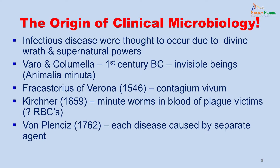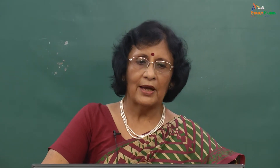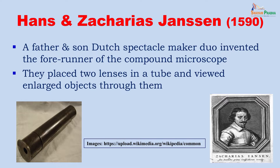In 1762 it was again postulated that each disease was caused by a separate agent. We had to wait for the development of the microscope before any progress could be made in microbiology. A father-and-son Dutch spectacle maker duo, Hans and Zacharias Janssen, were the first to work with the microscope. They created a compound microscope by placing two lenses at the two ends of a tube, which formed the basis of current telescopes, and found they could see enlarged objects through it.